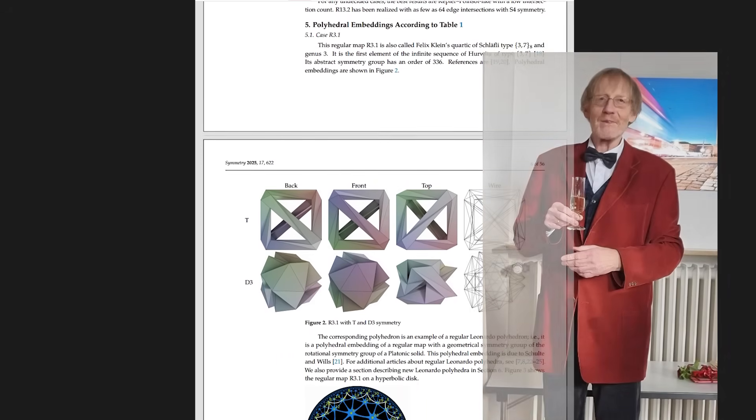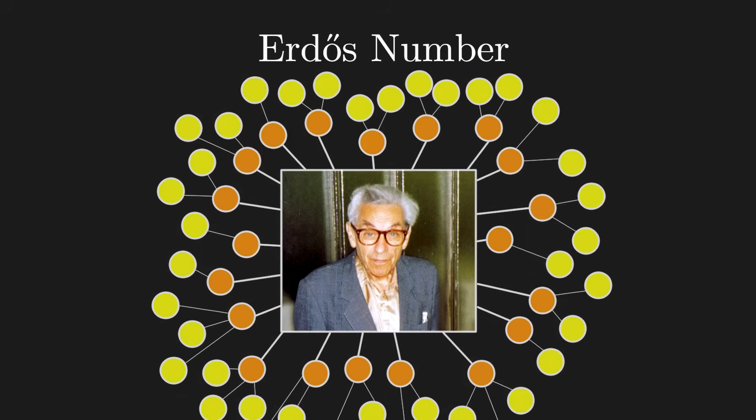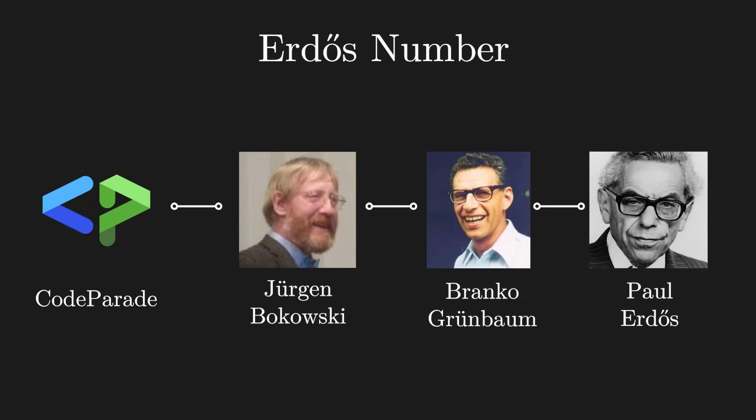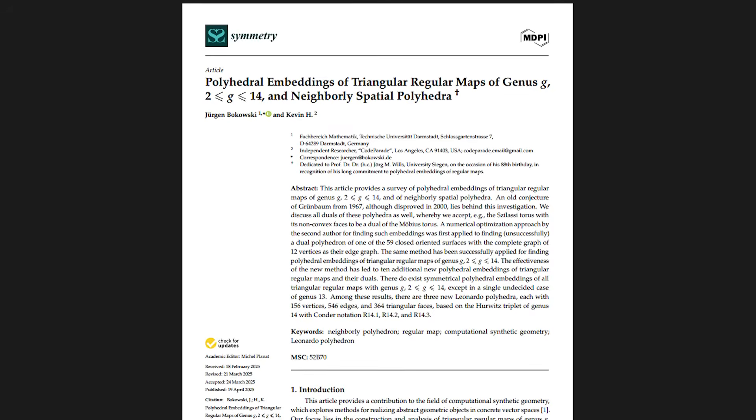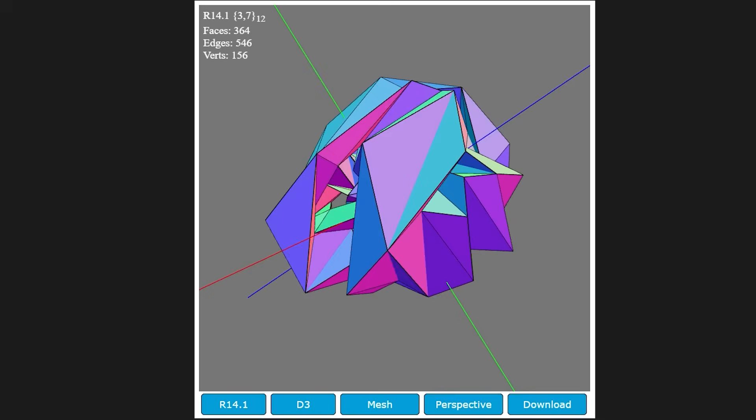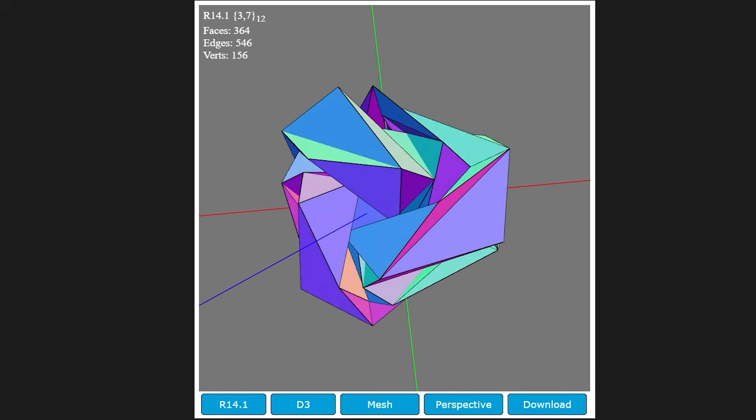And of course, this also means I technically have an Erdos number now, which is the degrees of co-authorship away from the famous traveling mathematician Paul Erdos. And my number is three. Not bad. Anyway, there's not too much else I wanted to say. The links to the paper and everything I've talked about are in the description. Thanks for watching!